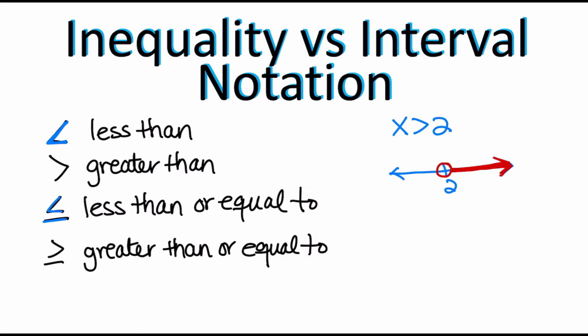Instead of using inequalities we're going to use something called interval notation. In interval notation this graph would change just a little bit. We're no longer going to be using open circle or closed circle, but instead we're going to be using parentheses and brackets. Parentheses are used for greater than or less than, and brackets are used when it's or equal to — less than or equal to, greater than or equal to. So in interval notation I'm going to graph using parentheses, shade to the right, and that is the key difference: we move from open/closed circles to parentheses and brackets.